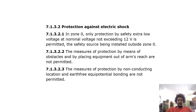Protection against electric shock in zone 0: only protection by SELV at a nominal voltage not exceeding 12 volts is permitted, with the safety source installed outside zone 0. The measures of protection by means of obstacles and by placing equipment out of arm's reach are not permitted. The measures of protection by non-conducting location and earth-free equipotential bonding are also not permitted.